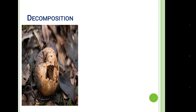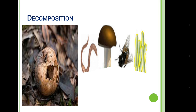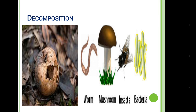After the death of plants and animals, decomposition occurs by the decomposers. Here the flow of energy stops, and the decomposers release nutrients to the environment, which are again utilized by the plants.